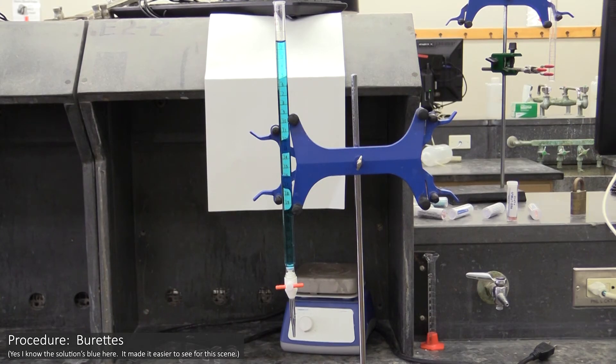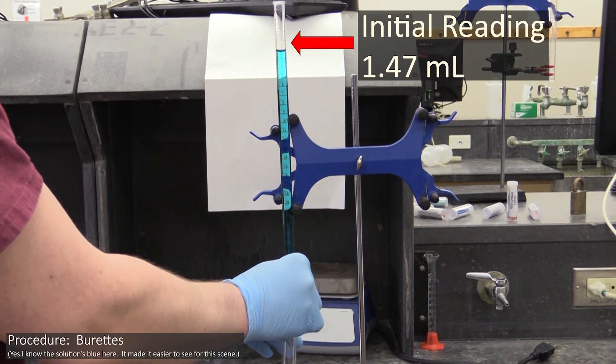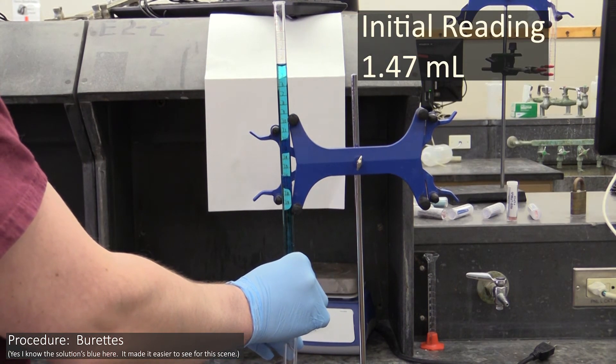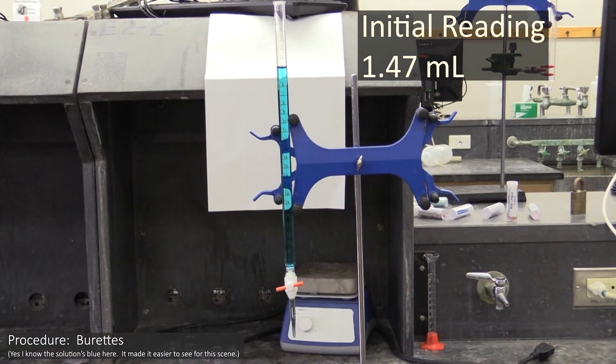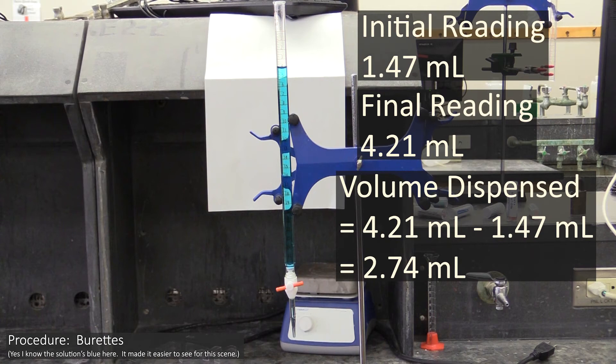To determine how much fluid you've dispensed from your burette, you will first take an initial reading to the hundredths place by interpolation. After you have dispensed what you need to, you will take a final reading and calculate the volume dispensed by subtracting the initial reading from the final.